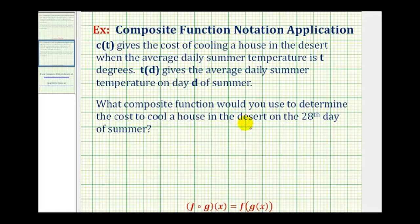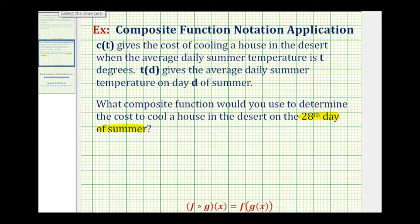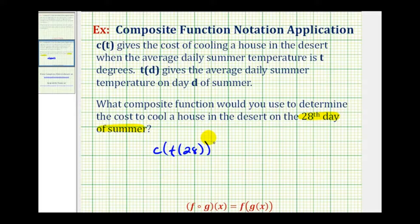We want to know the cost to cool a house when given it's the 28th day of summer. If we evaluate t of 28, this gives us the average daily summer temperature on that day. Then once we know the average temperature, we substitute that into function c to determine the cost of cooling the house. So we first evaluate function t of d, or in this case t of 28 — this is the inner function. Its output is the average daily summer temperature, which is the input into function c, our cost function. So c of t of 28 is our composite function, which we can also write as c after t of 28.